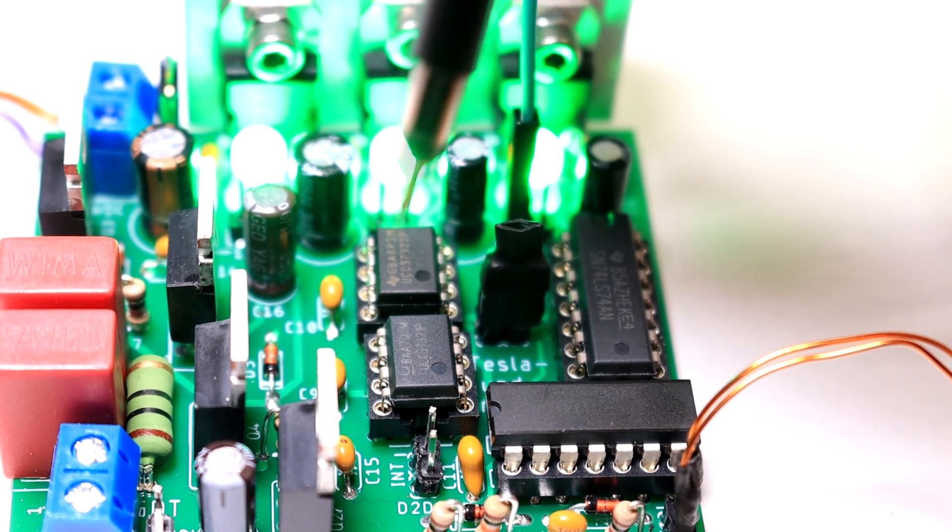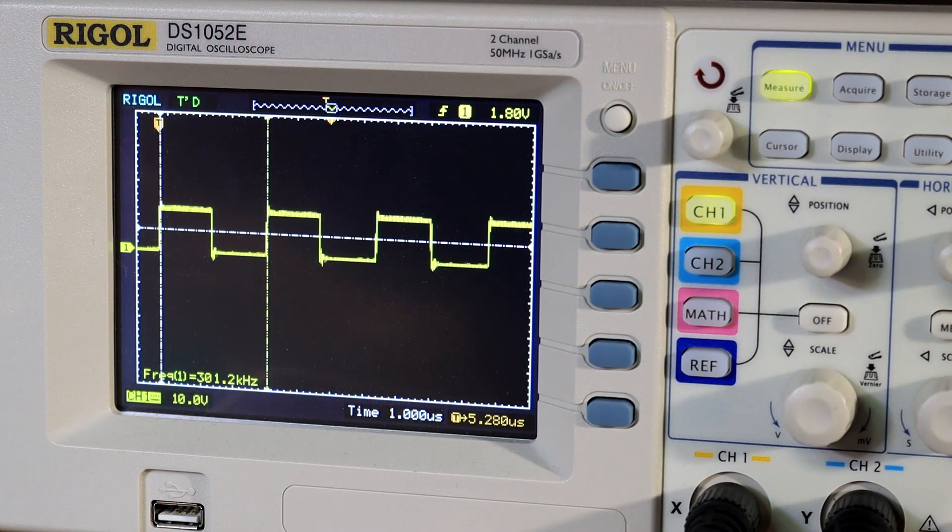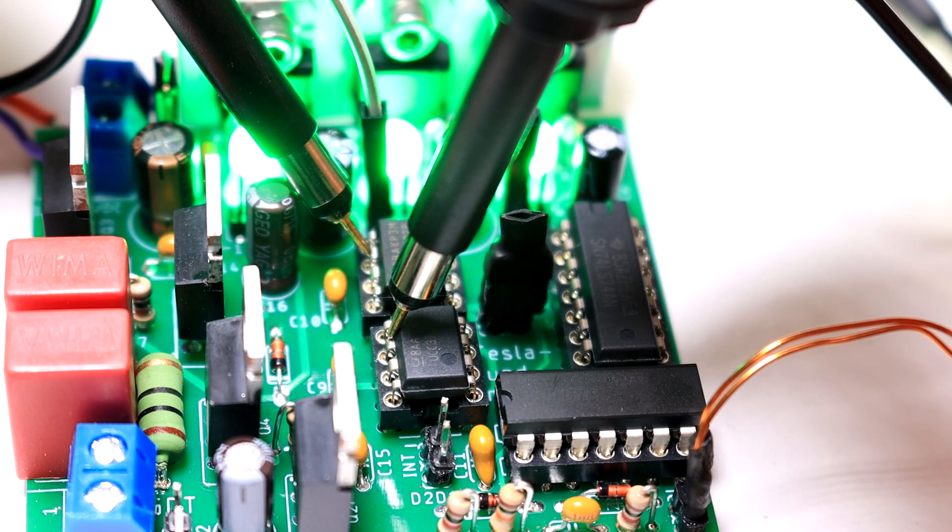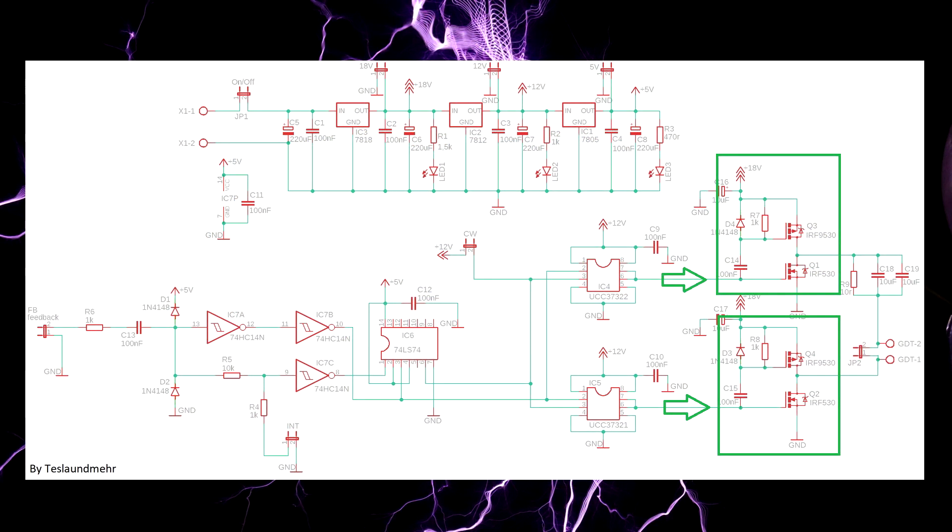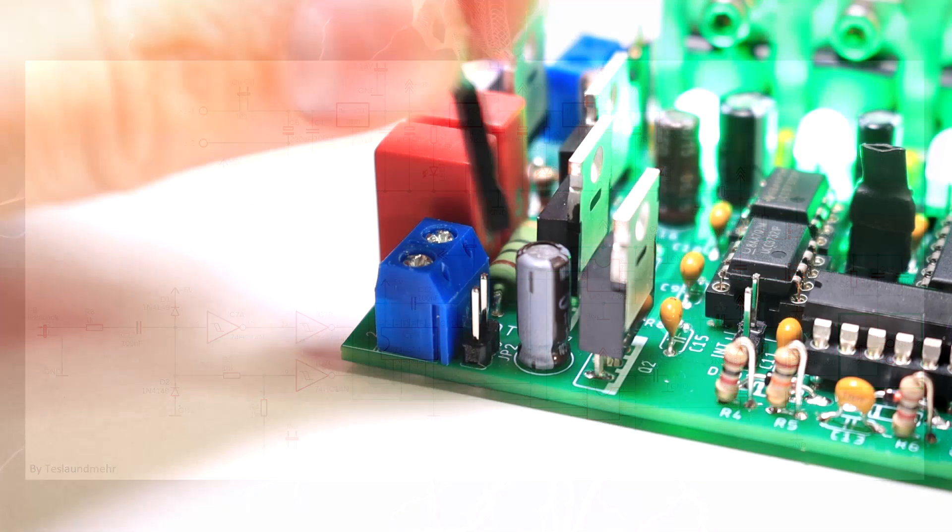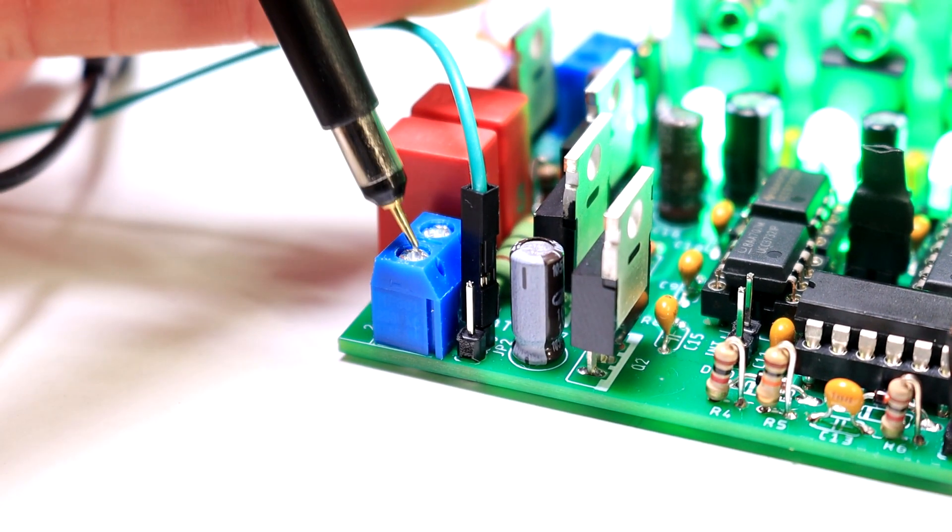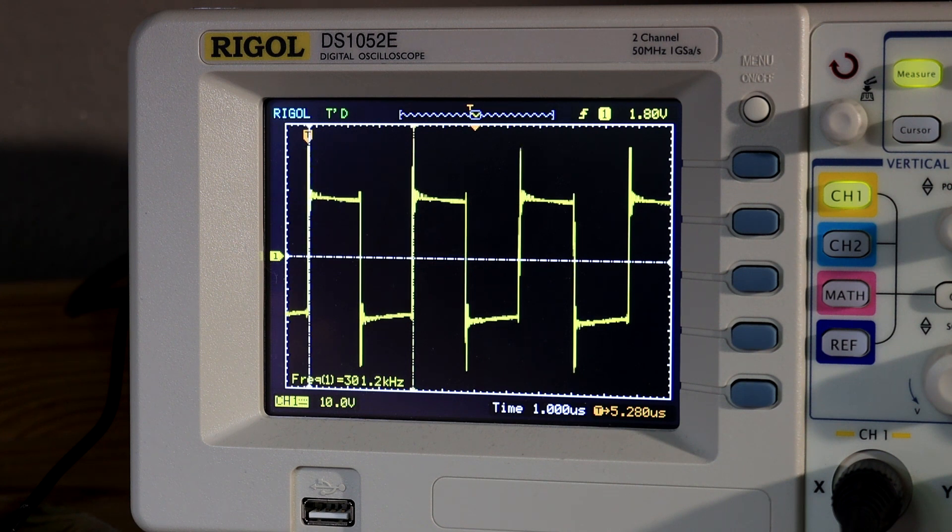If everything works as it should we measure at leg number 6 and 7 a clean square wave signal with a higher amplitude than at the input. At the UCC 37321 the square wave signal should be inverted. This looks like this. The two signals then each go into a MOSFET push-pull stage. Now we only have to measure the output signal of the two stages. We do that with this PGR connector. The gate drive transformer will be attached to this connector later. The signal should be a square wave signal again but the amplitude is higher.